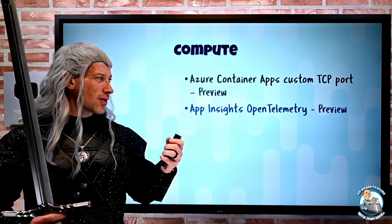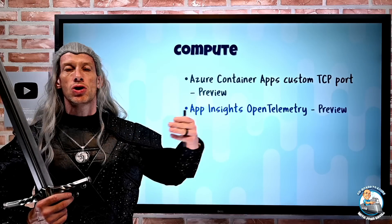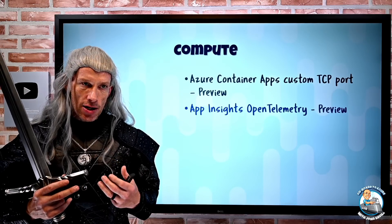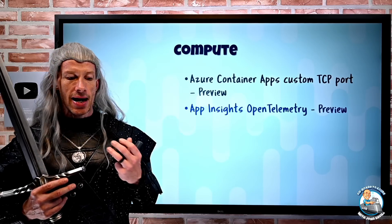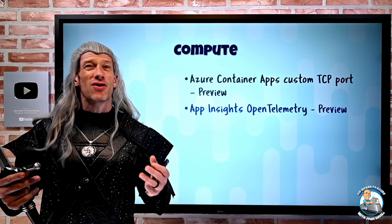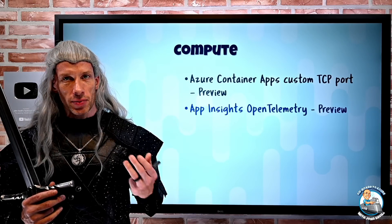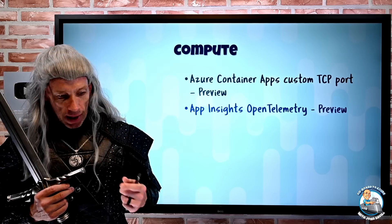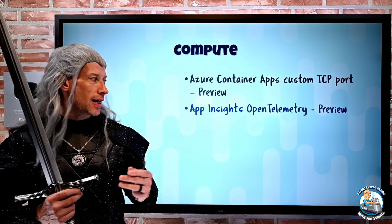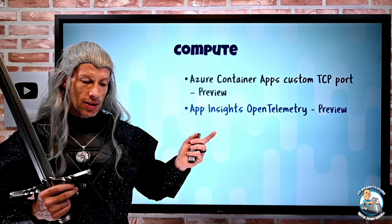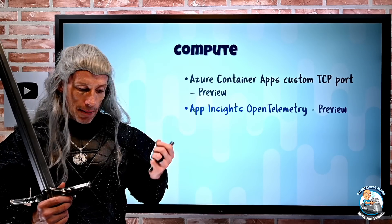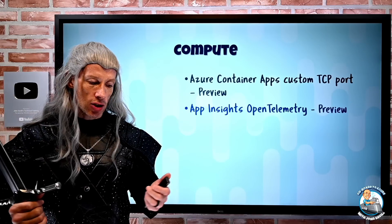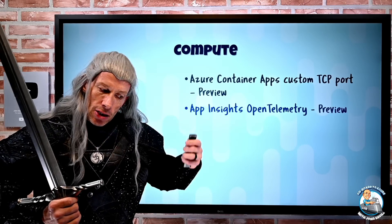Application Insights is continuing its march toward open telemetry. Open telemetry is this vendor-neutral set of APIs and SDKs, seen as the future of telemetry instrumentation. Specifically now, there's a big push towards metrics, sampling, exceptions, and resiliency with Application Insights. For example, I can now use OpenTelemetry-based metrics and inject and send them to Application Insights, so there's continuing investment there.